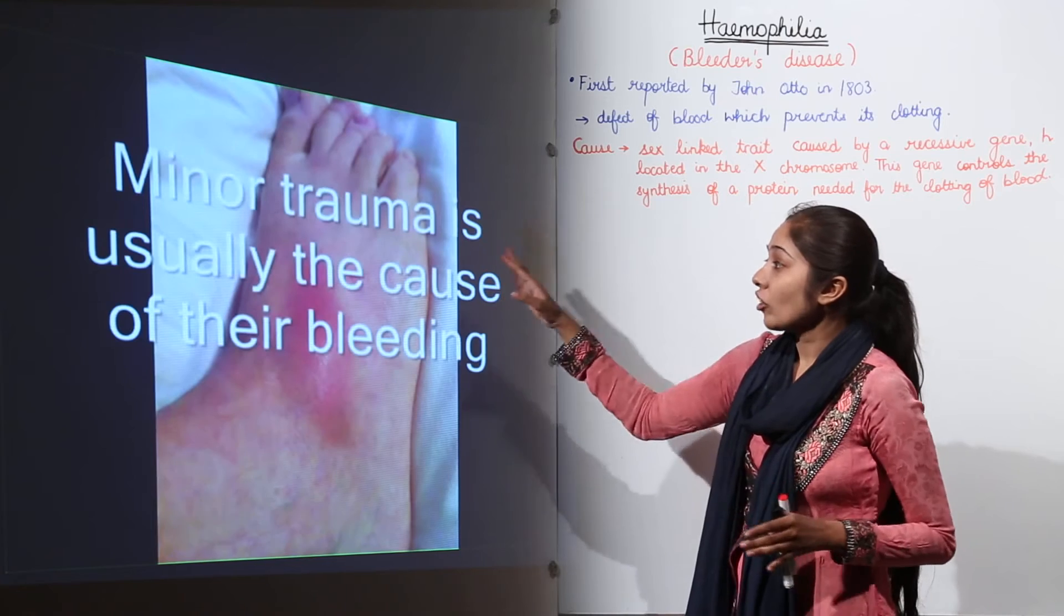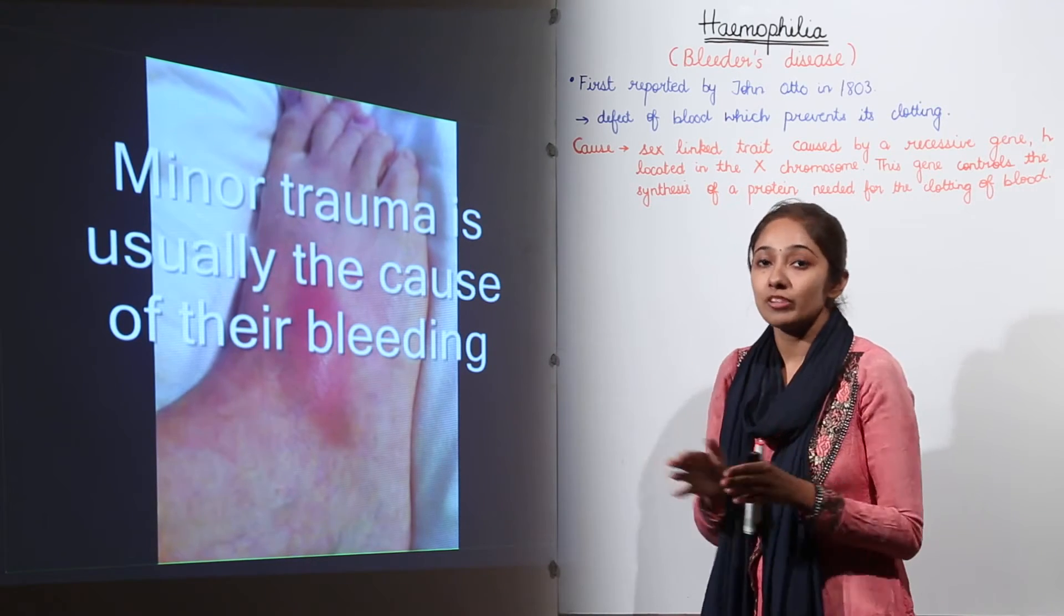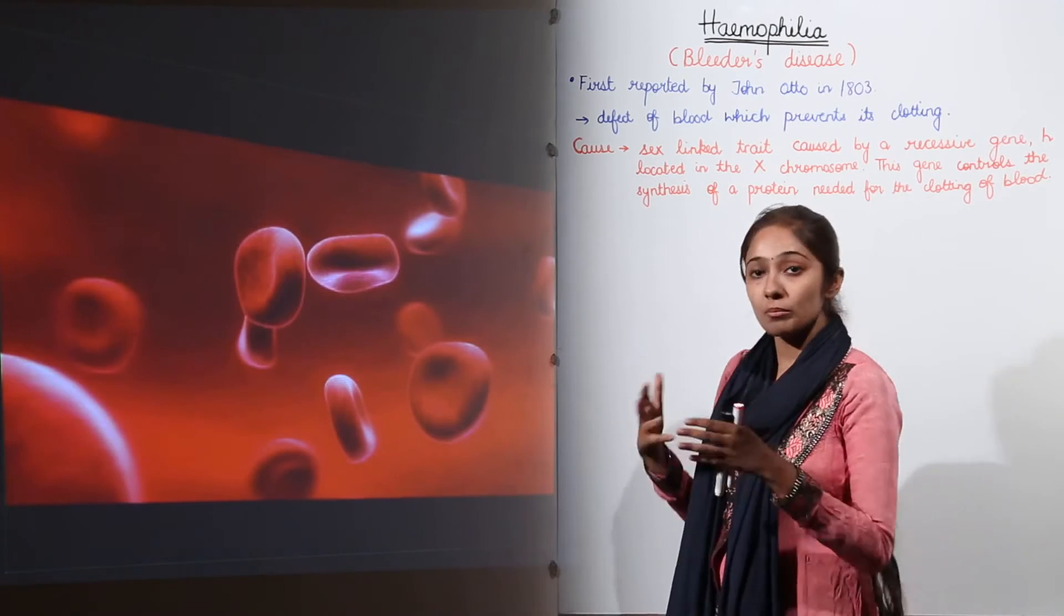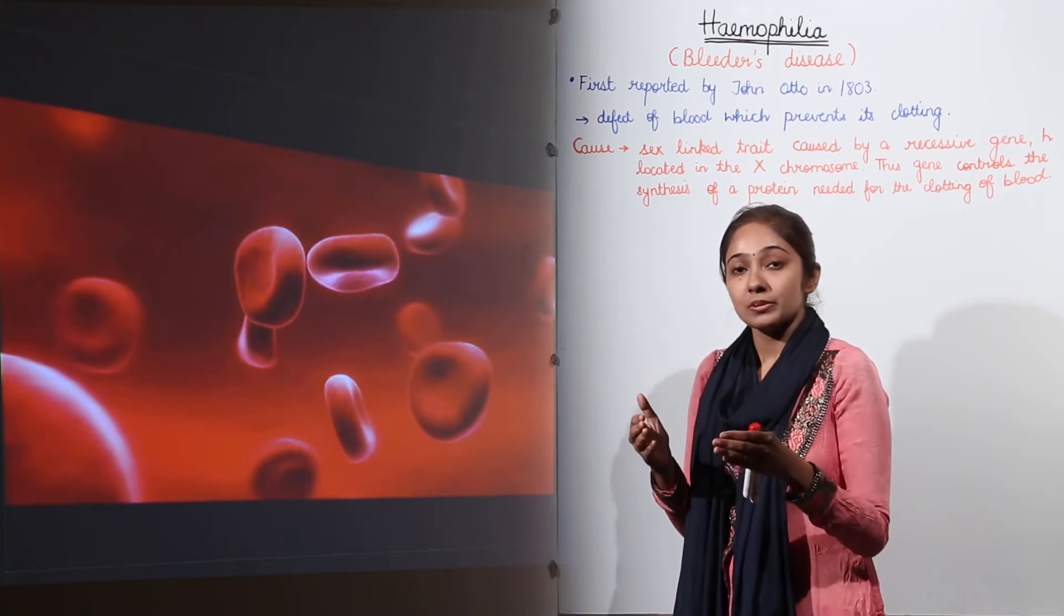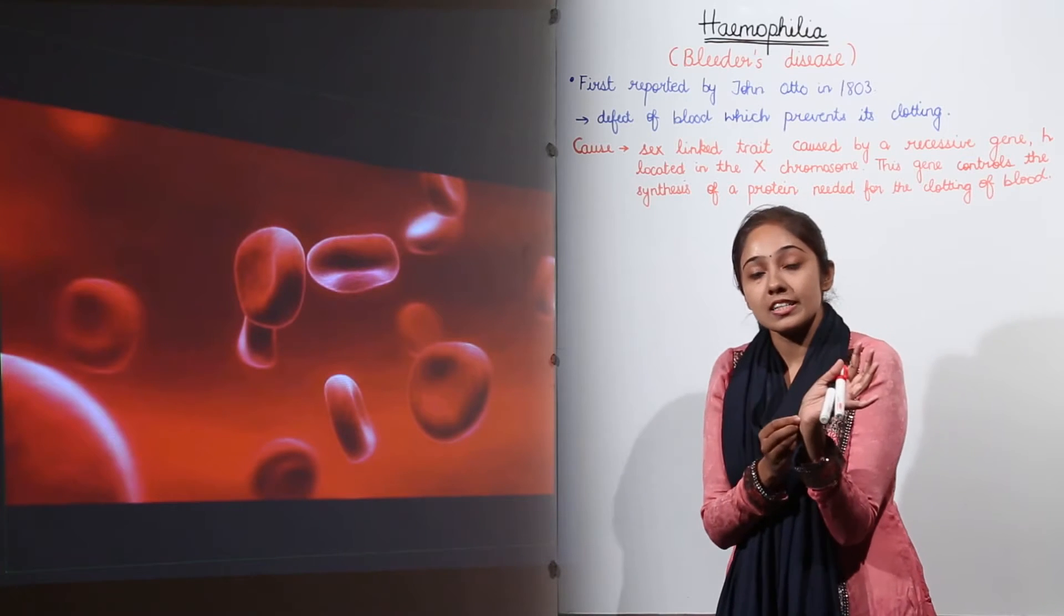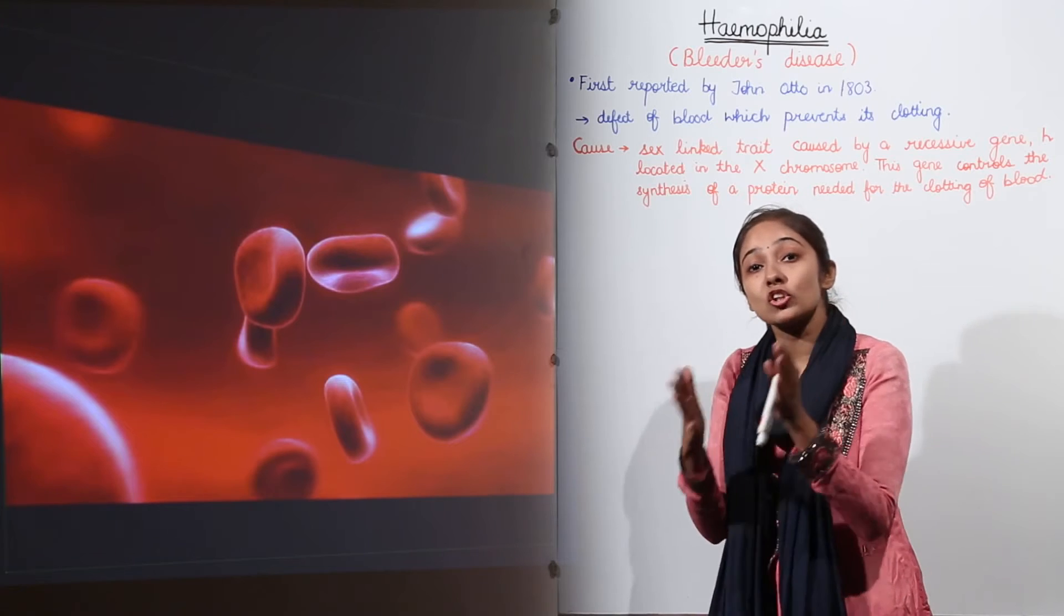Minor trauma is usually the cause of the bleeding in case of mild Haemophilic patient. The persons who are suffering from mild Haemophilia, there is normal bleeding. But in case of moderate Haemophilia, severe cut, if there is a bruise or a cut, it can lead to severity because the bleeding is for a much longer time.